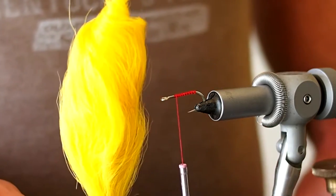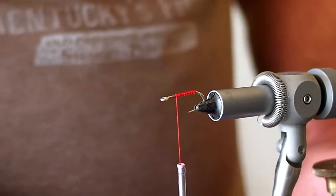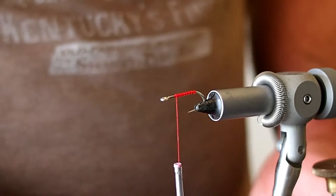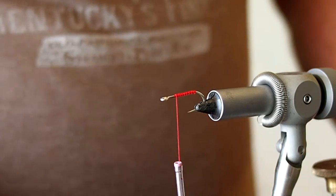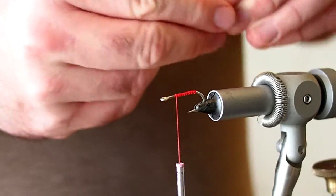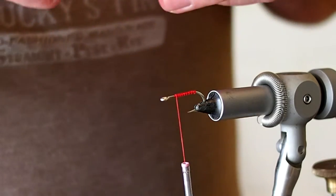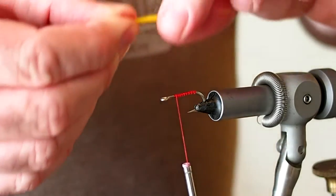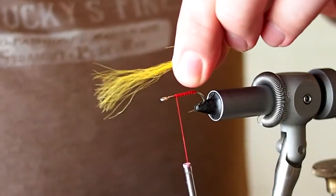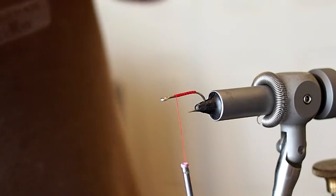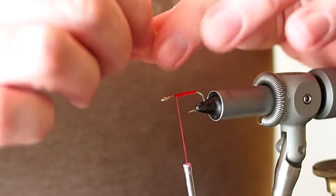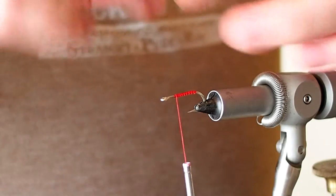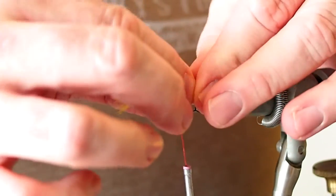For the tail I'm going to be using some yellow kip tail. Pull out any of the fluff and then grab it by the tips and pull out any of the short hairs. You want the tail to be about the same length as the body, that looks about right.